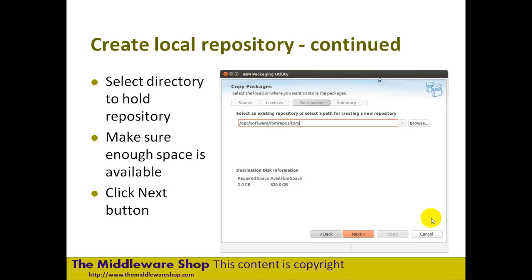Where are we going to put this repository? Where's it going to be saved to? Because we're downloading this and we're going to put it onto our own disk structure somewhere. On Windows you'll have some sort of drive, hopefully a D-drive or something. Being Linux, it's just a file system. So make sure you've got enough space — you need plenty of space. In this case, you can see it requires about two gigabytes.